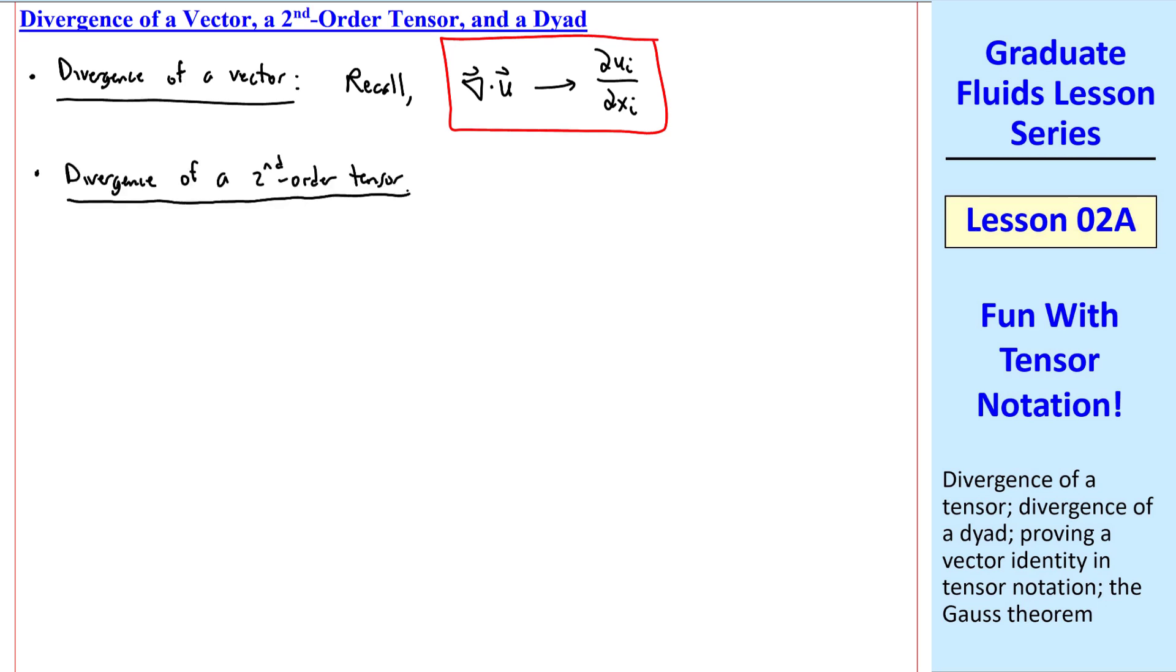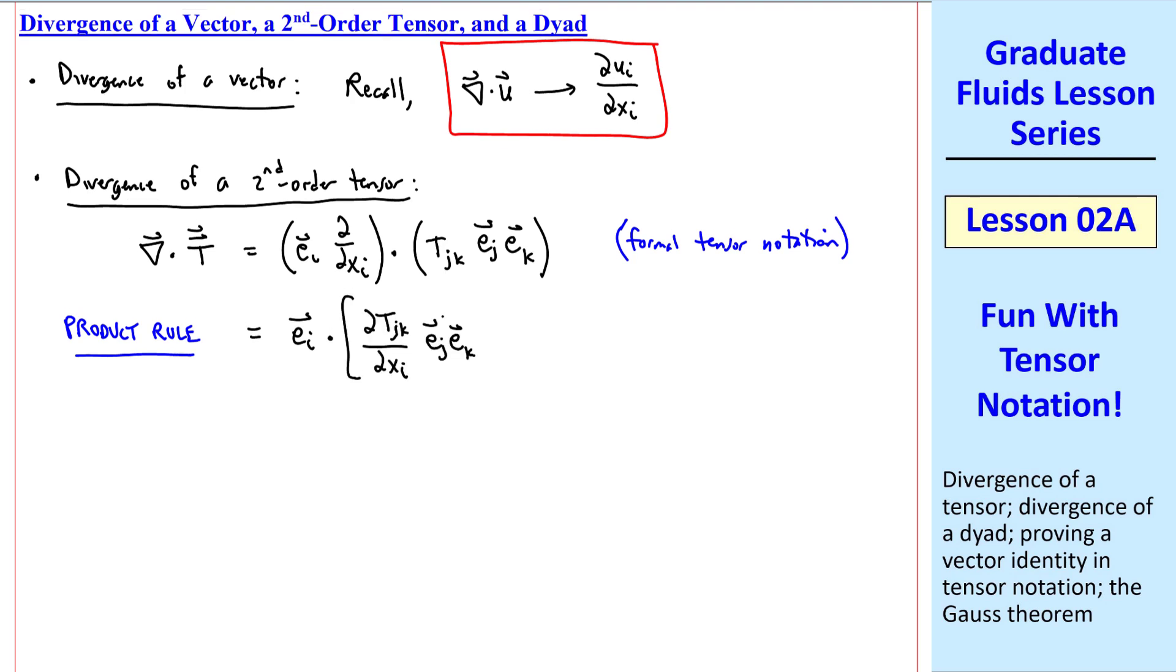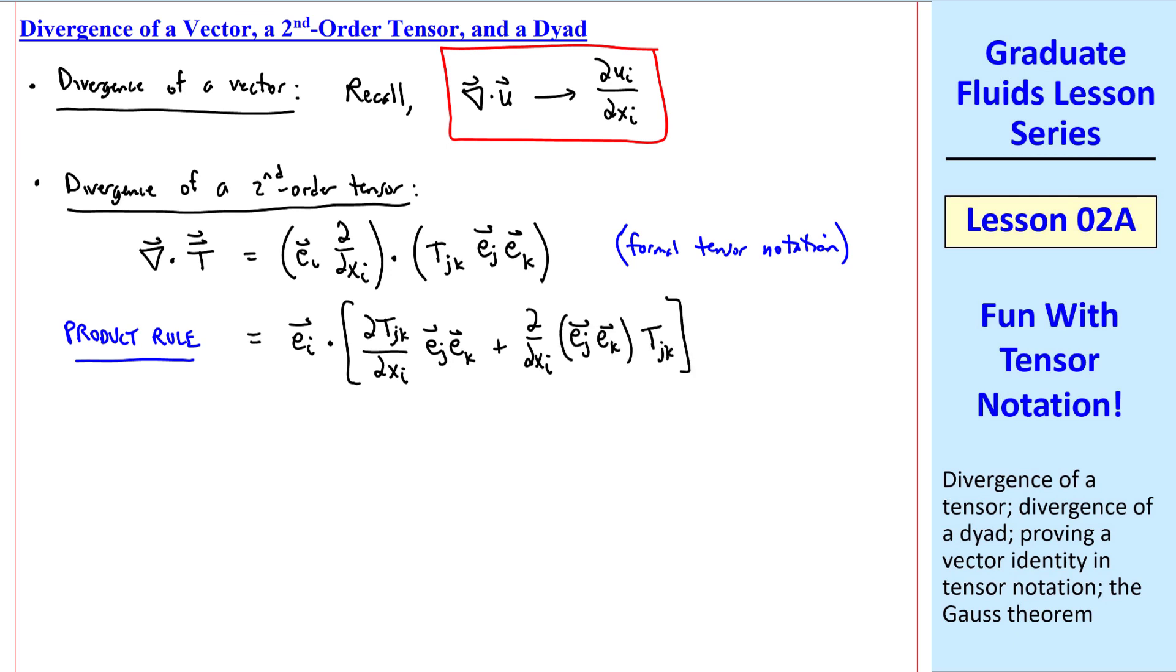Now consider the divergence of a second-order tensor. In vector notation, we express this as del dot t, where t is the second-order tensor. We can write this out in formal tensor notation as unit vector ei del del xi dotted with tjk, unit vectors ej and ek, where what I call formal tensor notation includes these unit vectors. We can use the product rule just like we're used to using.